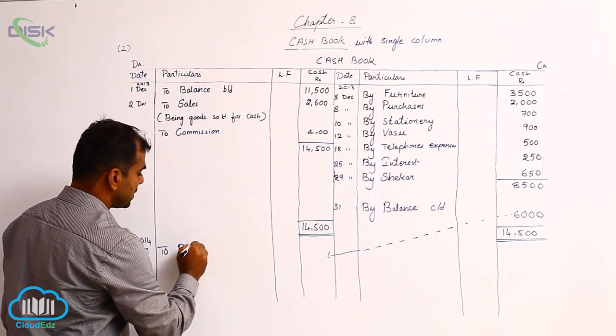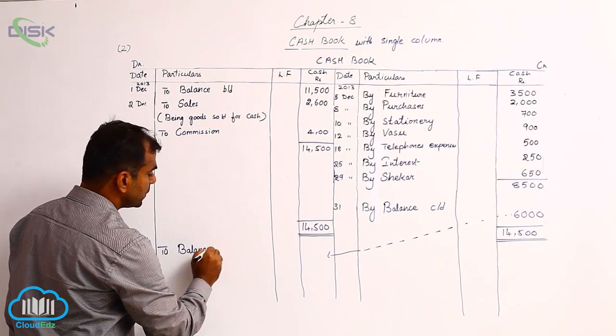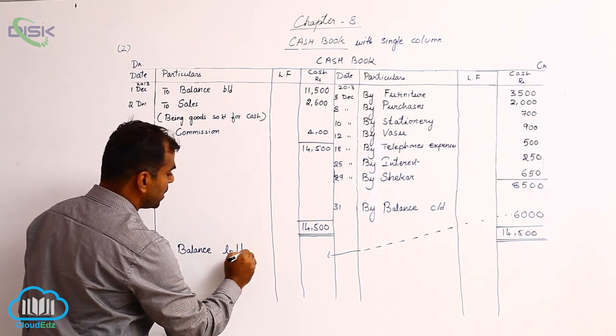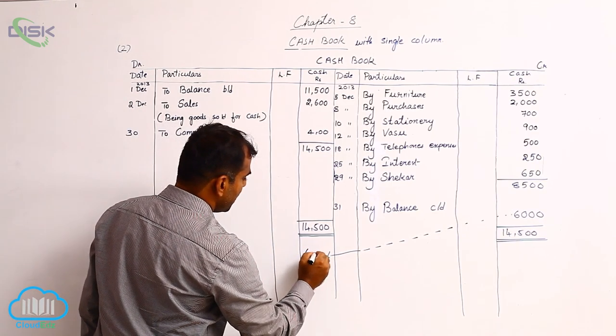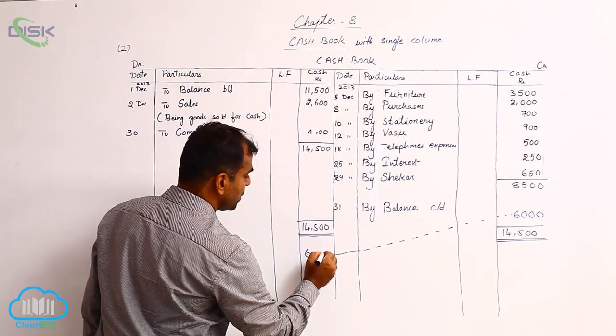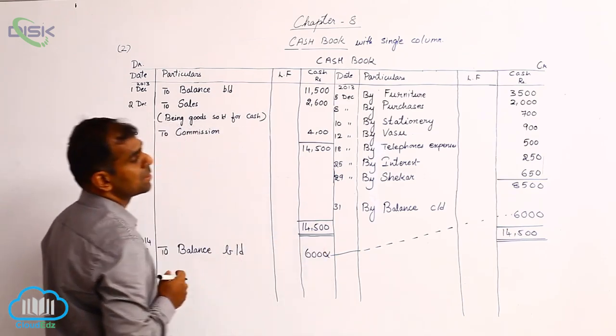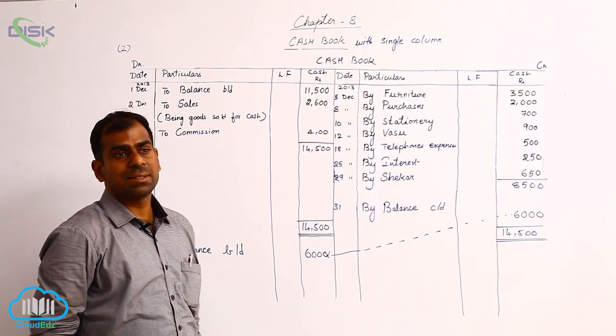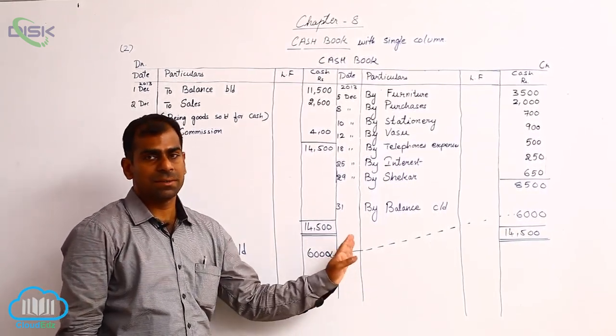To balance brought down. The word brought down because we are opening the cash book for next month: 6,000. So this comes to an end of the first problem.